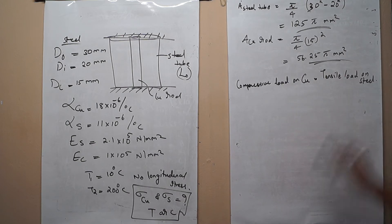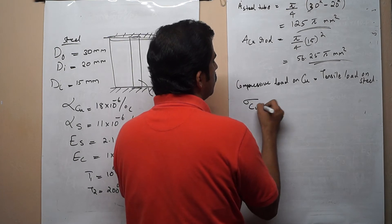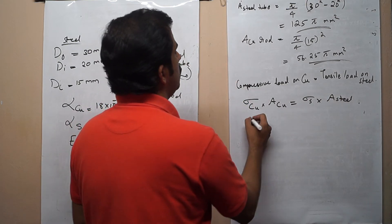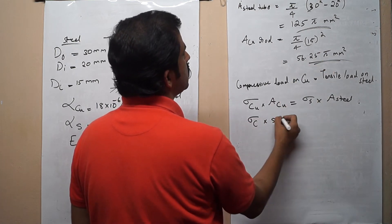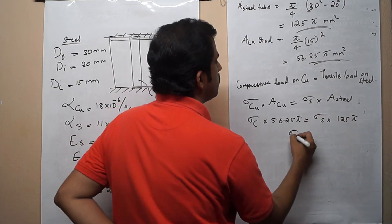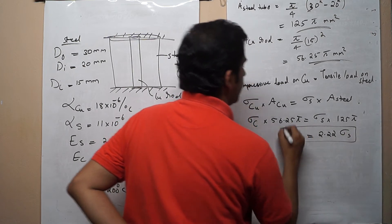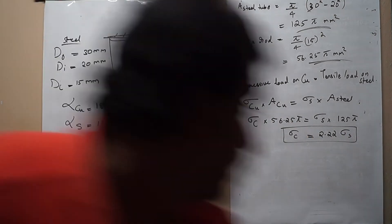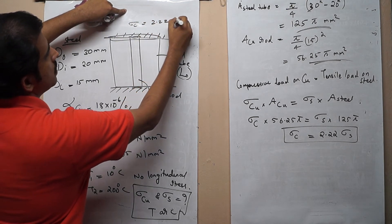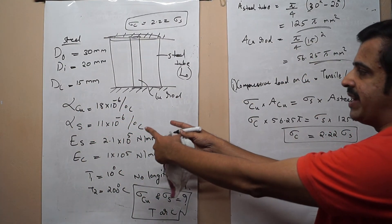If there is a compressive load on copper, automatically there will be a tensile load on steel. Load equals stress multiplied by area, so we write: σ_copper × A_copper = σ_steel × A_steel. That gives σ_copper × 56.25π = σ_steel × 125π, which simplifies to σ_c = 2.22 σ_s. This is our first relation between sigma copper and sigma steel.